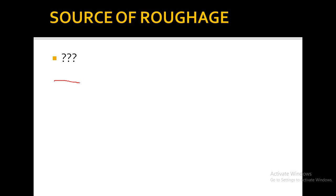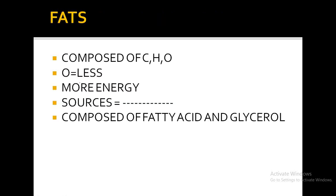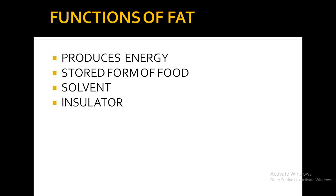The sources of roughage we have already seen in the first slide. Now, what are fats? Fats are composed of fatty acids and glycerol, and the elements present in fats are carbon, hydrogen, and oxygen. The ratio of oxygen in fats is comparatively low compared to carbohydrates, but fats provide more energy than carbohydrates. Sources of fats include ghee, butter, milk, cheese, vegetable oil, and fish liver oil.